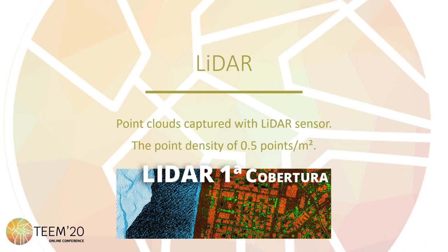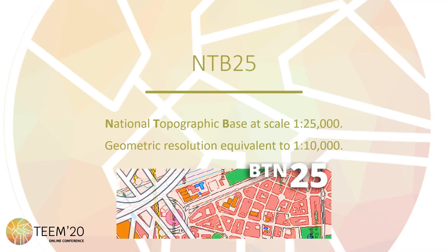In this case, the altimetric accuracy is less than 20 cm. And finally, the national topographic base at scale 1:25,000. In this case, we will consider only the contour lines, which have a maximum admissible altimetric error of 2.5 meters.